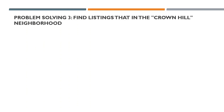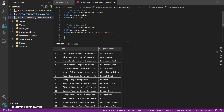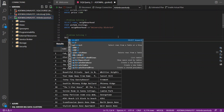We're looking at problem solving number three, which says we should find the listings in the Grand Hill neighborhood. Which listings were done in the Grand Hill neighborhood? Some people want to analyze their data in Grand Hill, so they need listings only in Grand Hill. I'll go back to Azure Data Studio and write another query — this is problem solving three.